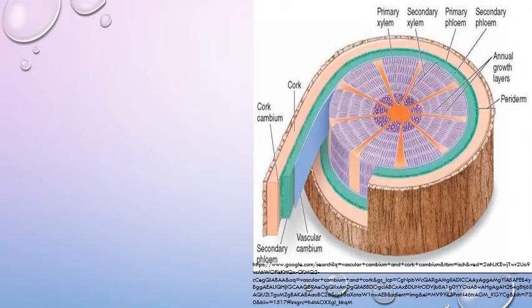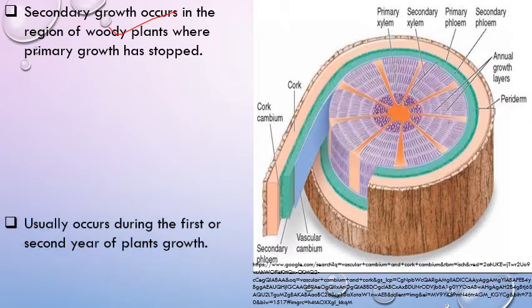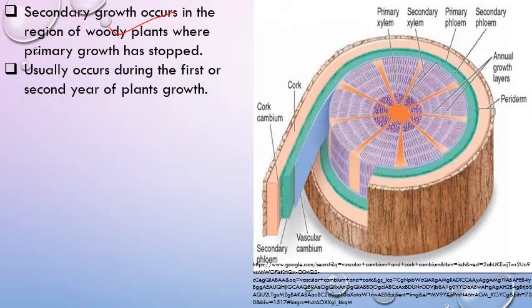Secondary growth occurs in the region of woody plants where primary growth has stopped. Where there is no growth in length, secondary growth takes place — in the basal portions of the plant, that is stem or root, the older portions. Secondary growth starts in the first or second year of plant growth.